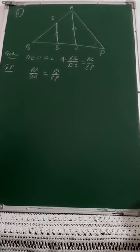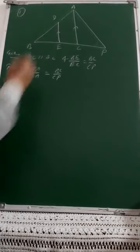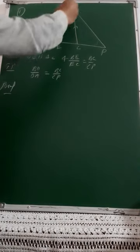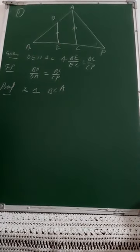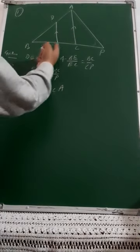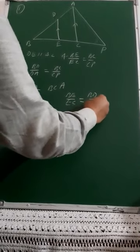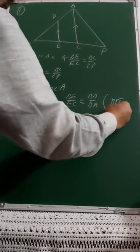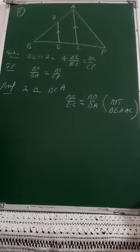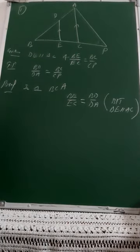This was a direct application of the Basic Proportionality Theorem. In the proof, we need to show BD upon DA equals BC upon CP. Looking at triangle BCA, we get BE upon EC equal to BD upon DA by the Basic Proportionality Theorem, because DE is parallel to AC. When a line is parallel to one side of a triangle, it divides the other two sides in equal proportion — that is the BPT statement. Label this result as equation one.